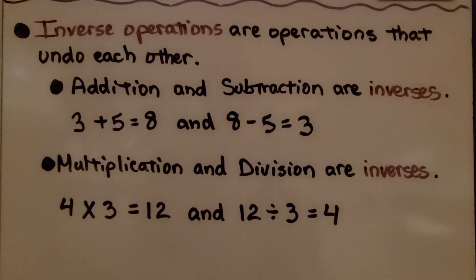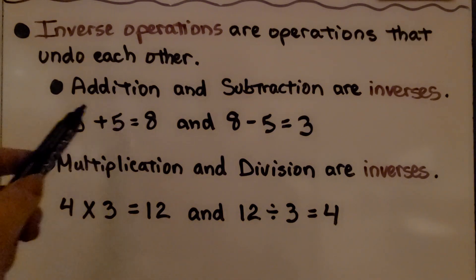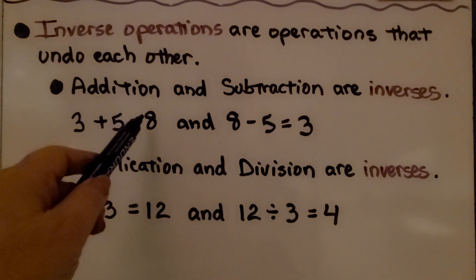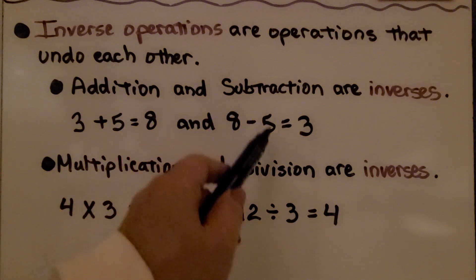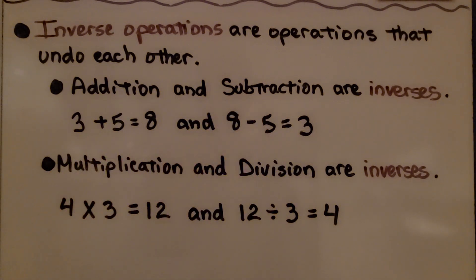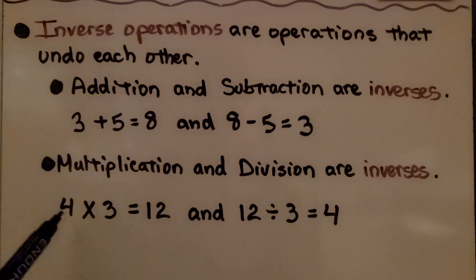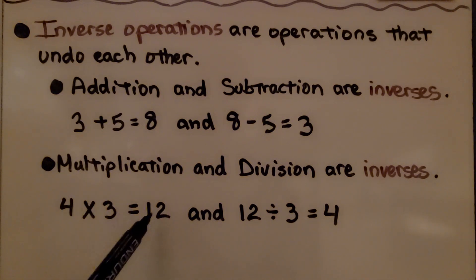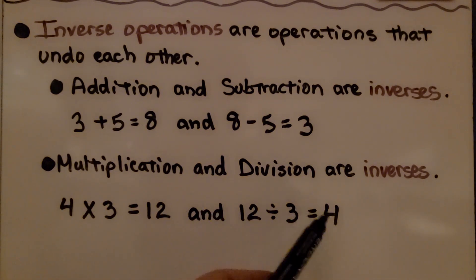Inverse operations are operations that undo each other. Addition and subtraction are inverses — we have three plus five equals eight, and we can do eight minus five equals three. Multiplication and division are inverses: four times three is equal to twelve, and twelve divided by three equals four. They undo each other.